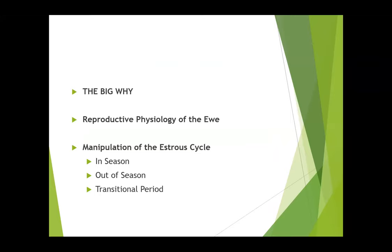So this is just a little bit of an outline of what we're going to cover today. The first is the big why — why manipulate reproduction? Why do synchronization? Why not just throw the rams out in the field and lamb in March and April, which is what the majority of sheep would want to do if left to their own devices. We're going to cover a little bit on reproductive physiology of the ewe, the main types of manipulating the estrus cycle, either in season, out of season, and in the transitional period.